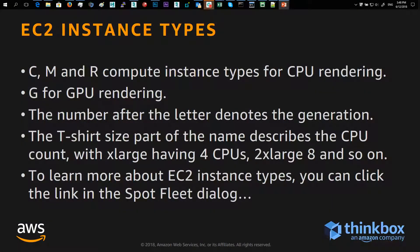We recommend the C, M, and R compute instance types for CPU rendering, and G for GPU rendering. The number after the letter denotes the generation — the 5th generation uses Skylake technology, while previous ones are Broadwell, Haswell, Ivy Bridge, and so on. The T-shirt size part of the name describes the CPU count, with XL having 4 CPUs, 2XL having 8, 4XL having 16, and so on. To learn more about EC2 instance types, you can click the link in the SpotFleet dialog.